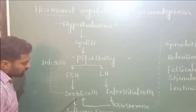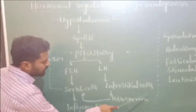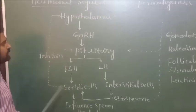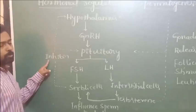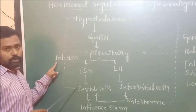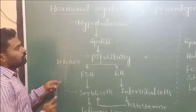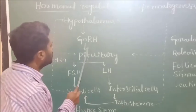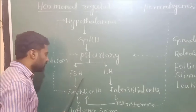Testosterone also stimulates Sertoli cells and is responsible for all kinds of secondary sexual characters in males. When the level of FSH increases in the blood, the Sertoli cells produce a glycoprotein hormone called inhibin. The inhibin sends a message to the hypothalamus to stop the synthesis of GnRH, so the pituitary gland is not stimulated and the synthesis of FSH is stopped.